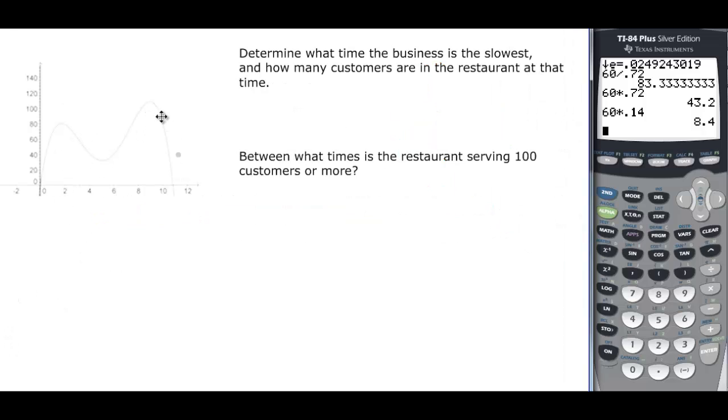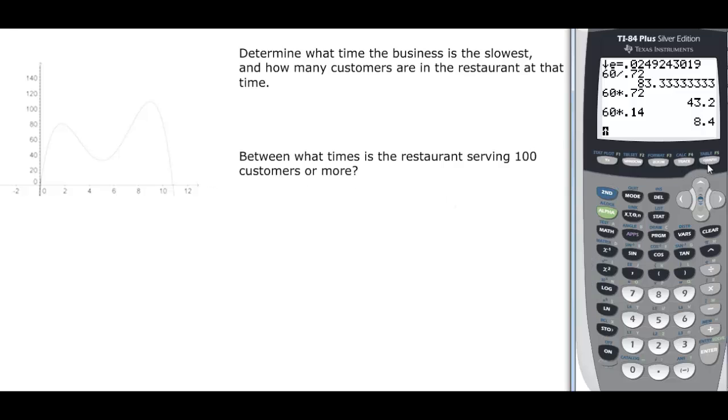And then I give you the graph so that we can not have to necessarily work with the calculator, although we can. What time does the business is the slowest? So that's going to be this point down here. So second trace, we want the minimum this time. Come back and go to the left of that minimum and enter and go to the right of that minimum and enter and then enter for the guess. And we find out that that is 4.98. So we could do 4.98 or we could just round it approximately 5 hours, which translates to 3 p.m. And then we want to know how many customers there are. Well, that would be 32.9, so let's please call that 33.